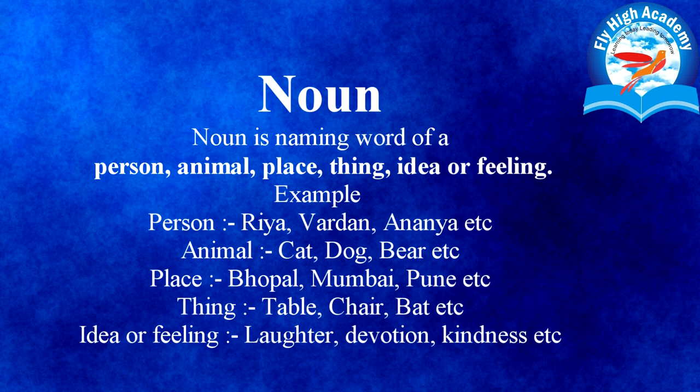Example देख लेते हैं। Person में आप किसी का नाम लिख सकते हैं, जैसे Riya, Vardan, Ananya, etc. Animal में आप animals के नाम लिख सकते हैं, जैसे cat, dog, bear. Place में आप किसी जगह का नाम लिख सकते हैं, जैसे Bhopal, Mumbai, Pune.